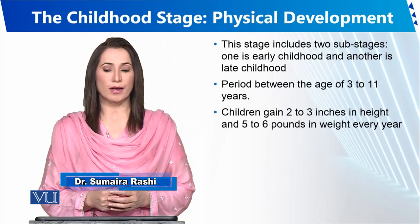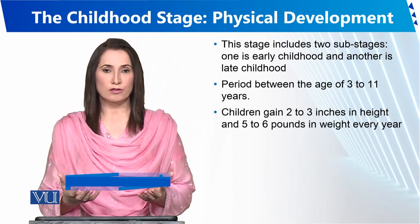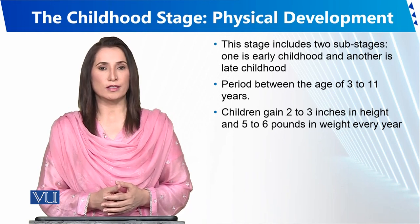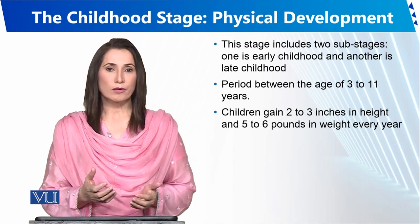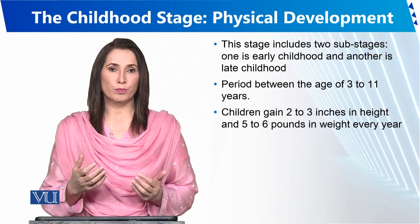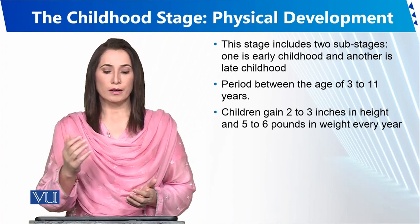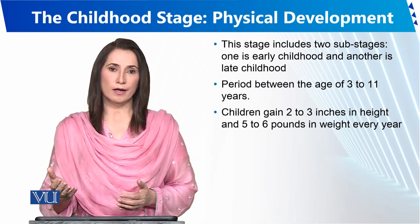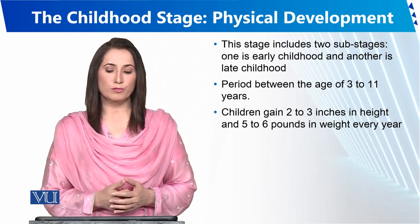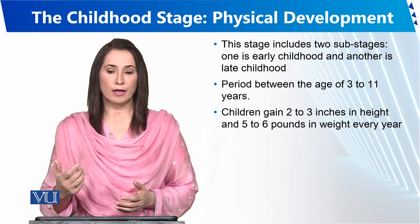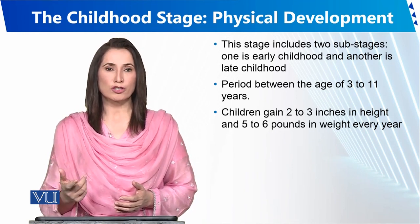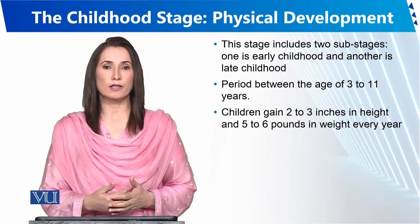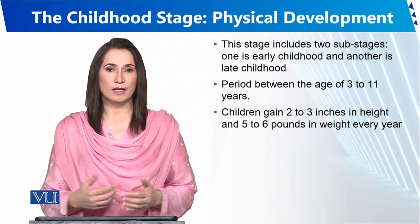In this stage, we have two parts: early childhood and late childhood. Early childhood covers ages 3 to 6, and the whole childhood phase is 3 to 11. Physical growth includes about 2 to 3 inches of height increase every year, along with an increase in weight.